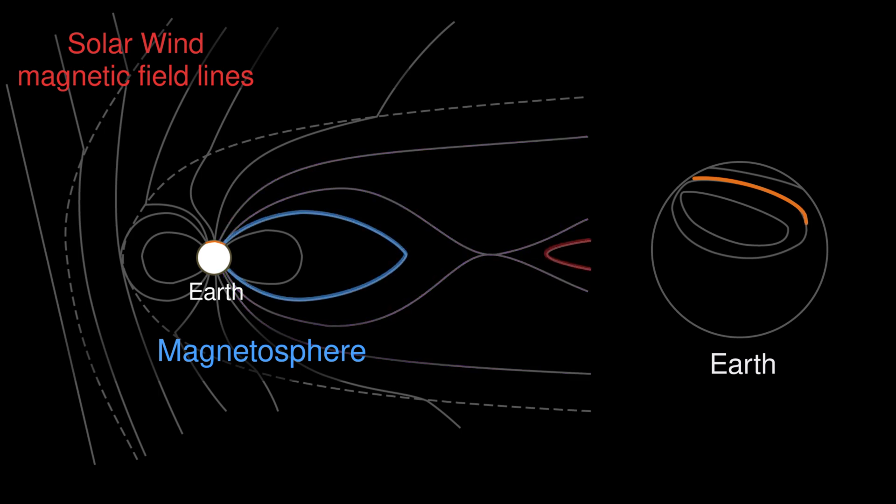The field lines at the night side can touch and change the connectivity again, snapping and circling back to the day side through the two sides of Earth. This entire process forms a complete cycle, called the Dungey cycle.